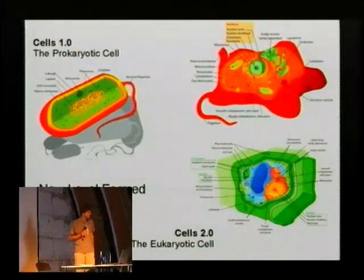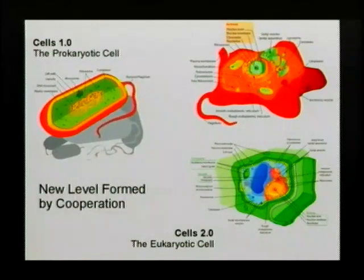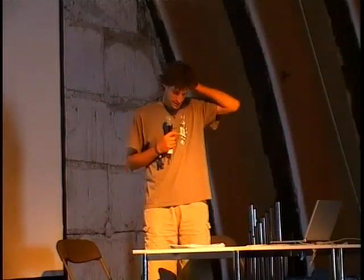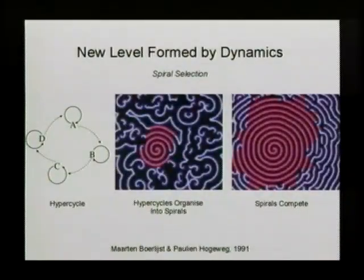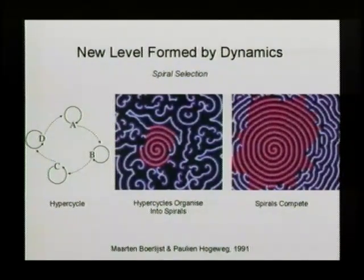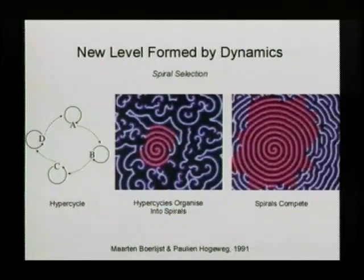You can also get these new levels of organization as a result of a bit more unexpected side effects of all kinds of interactions. A nice example is this one. This is a computer model of Maarten Boerlijst and Pauline Hogeweg from 1991. And they basically simulated hypercycles. They are cycles of basically replicating molecules that can catalyze each other's formations. So you can get a cycle of things that catalyze each other. When you put these in a spatial grid, in this case a cellular automaton grid, you get that they start to catalyze each other and they organize into spirals so they can easily reach each other.